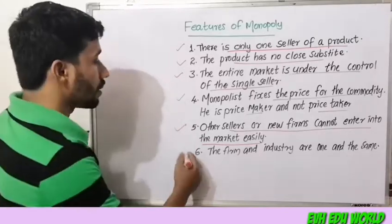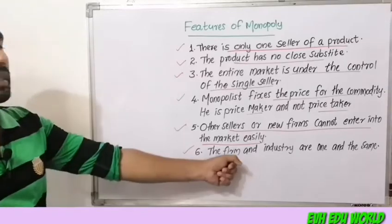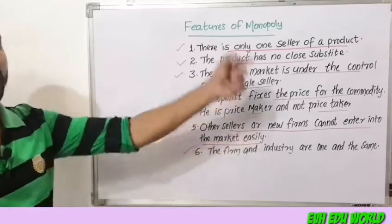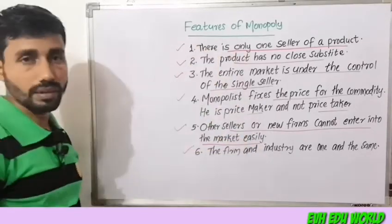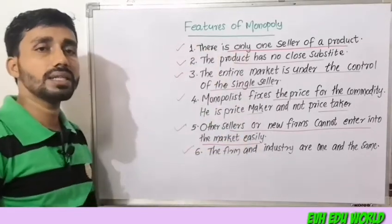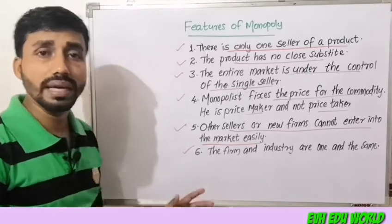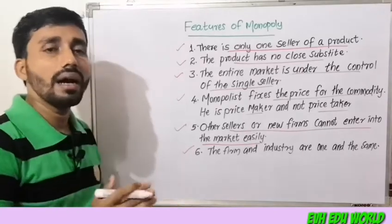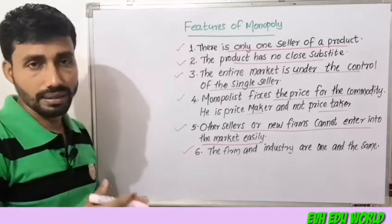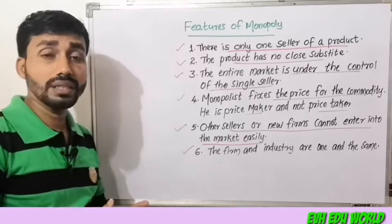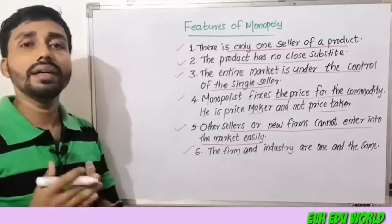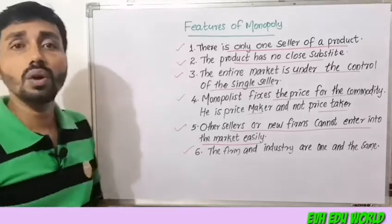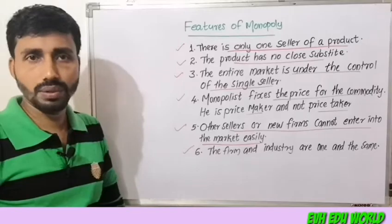The sixth feature is that the firm and industry are one and the same in a monopoly. These are the features of monopoly.